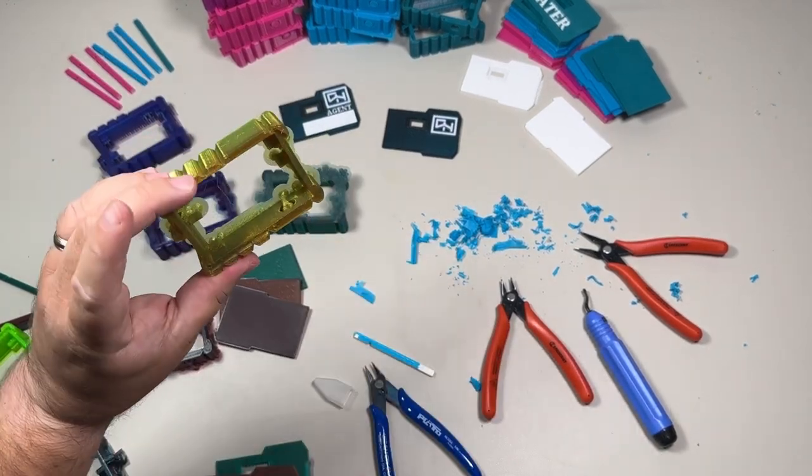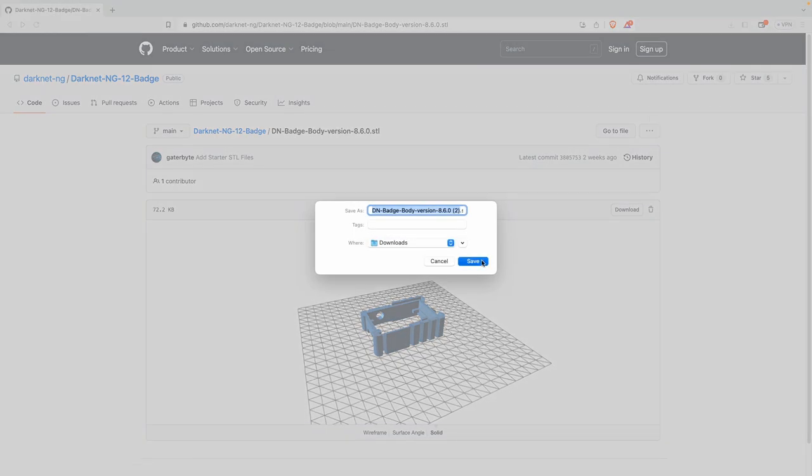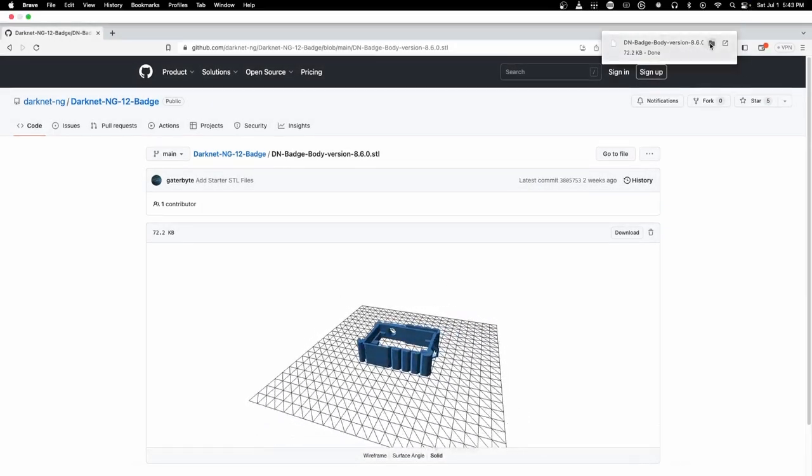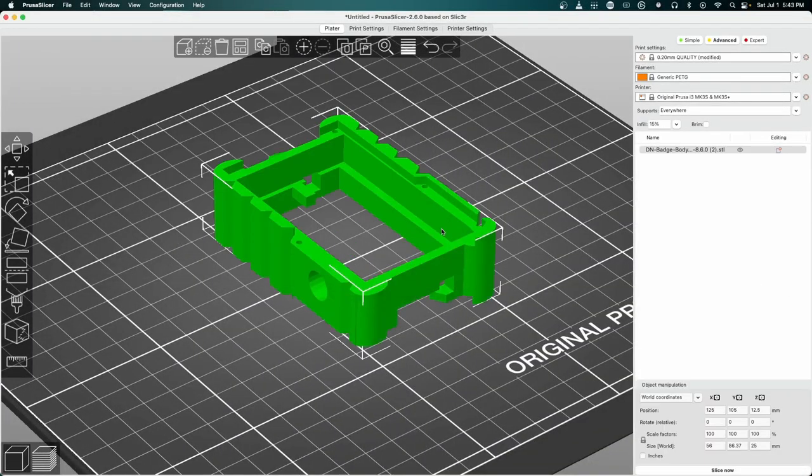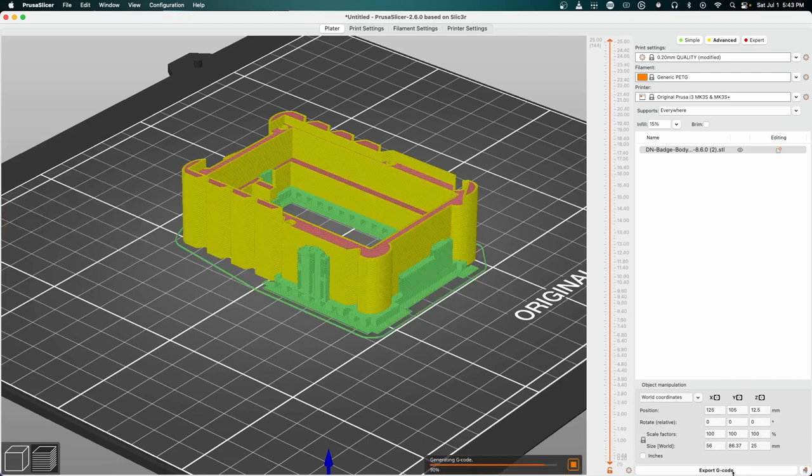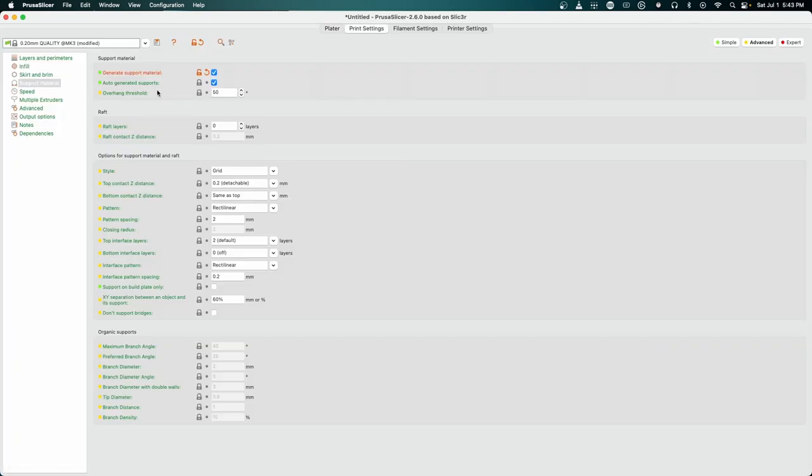So if you want to do this, go jump on to our GitHub, download the body file. Once you've done that, open it up inside of Prusa Slicer. Once you've imported it, go to your supports, enforce it everywhere, slice. Now it brings up the default grid. Instead, now go to the print settings, go over to the support material and go down to where it says style, down to organic.